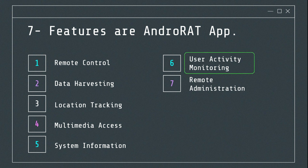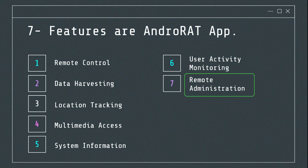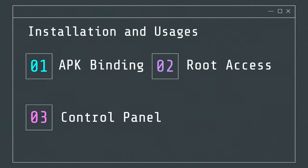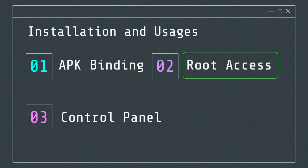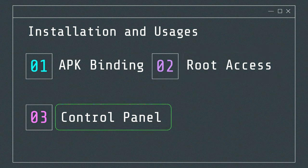User activity monitoring: access browsing history with visited websites and timestamps, and monitor usage of installed applications including time spent on each app. Remote administration: send commands via SMS to control the device remotely and initiate calls without the user's knowledge. AndroRat can be bound to a legitimate app to disguise its presence — when the legitimate app is installed, AndroRat installs silently in the background. Root access can enhance its capabilities. Attackers use a control panel or command-line interface to issue commands and receive data from the infected device.